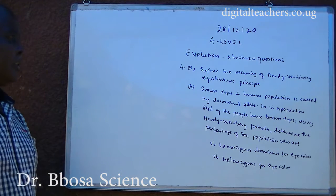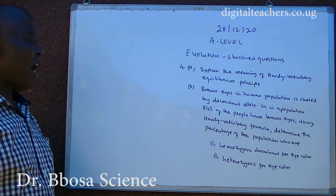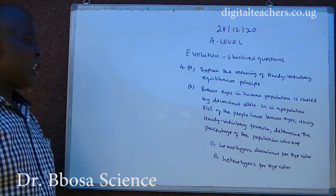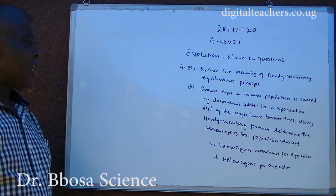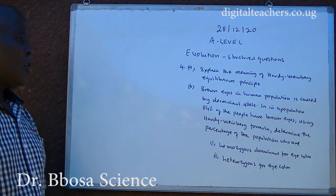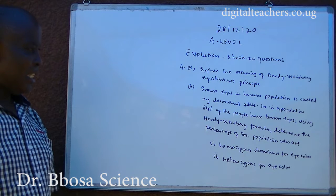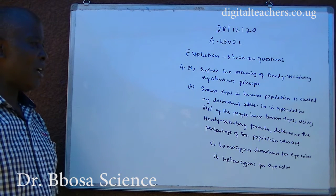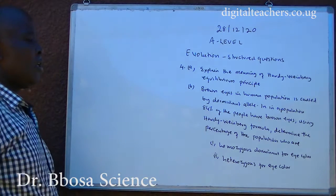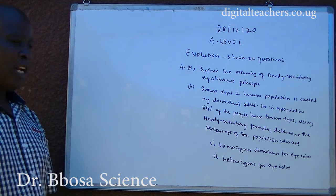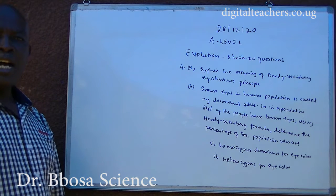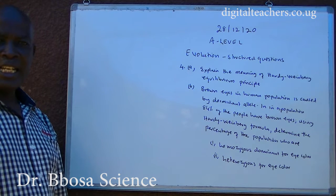Number four. A. Explain the meaning of Hardy-Weinberg Equilibrium Principle. B. Brown eyes in human population are caused by a dominant allele. In a population, 84% of the people have brown eyes. Using Hardy-Weinberg formula, determine the percentage of the population who are one, homozygous dominant for the eye color. Number two, heterozygous for eye color. You can pause and answer.